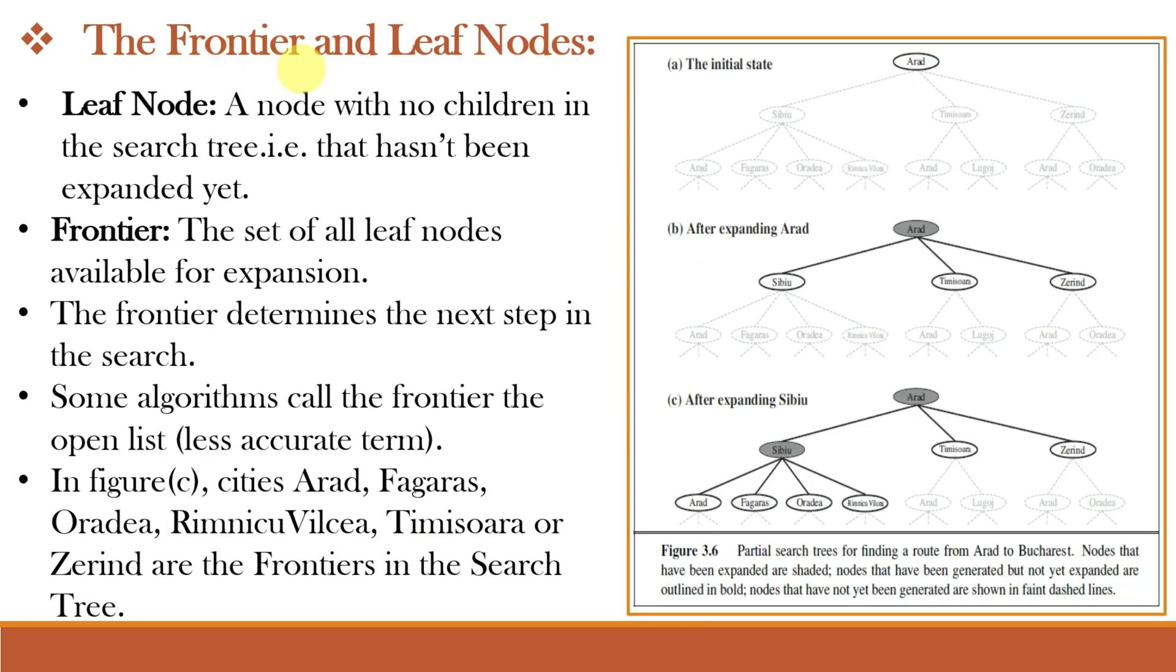Let us understand the frontier and the leaf nodes. A leaf node is a node that hasn't been expanded yet or with no children nodes. In this figure, for figure A, we can see that Arad is still not expanded, so Arad is a leaf node. The frontier consists of all leaf nodes that can be expanded next.